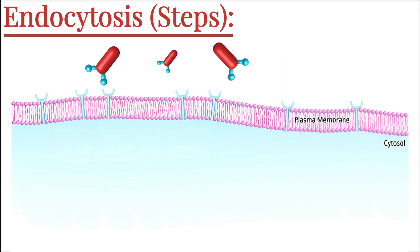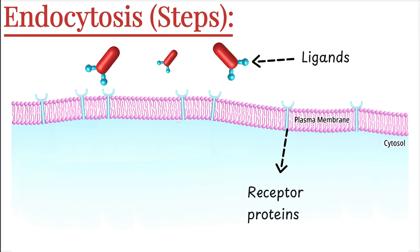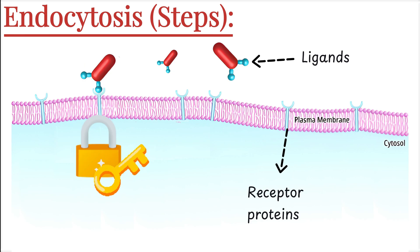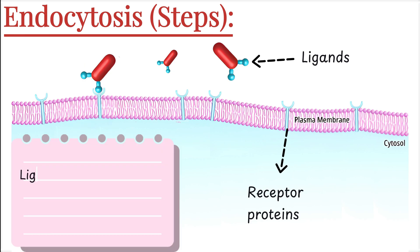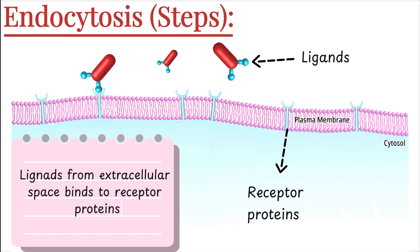On the outer surface of the cell membrane, there are special receptor proteins that recognize and bind to these ligands. These receptor proteins are highly specific, like a lock and key system. So in the first step, ligands from the extracellular space bind to the receptor proteins on the cell surface, marking the beginning of the endocytosis process.